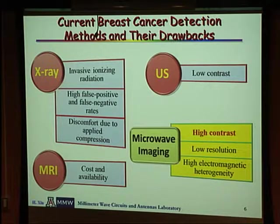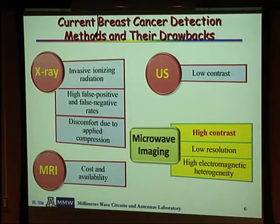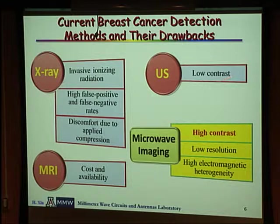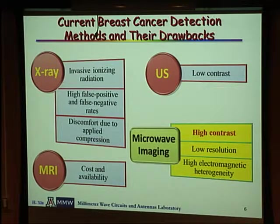MRI tends to be costly and availability is also an issue — for example, you need a large DC magnet, which makes MRI not as widely available as X-ray. Ultrasound is also sometimes used as a complementary technique. However, ultrasound has very low contrast: between the malignant tumor you're trying to detect and the healthy tissue, the contrast is not that great.